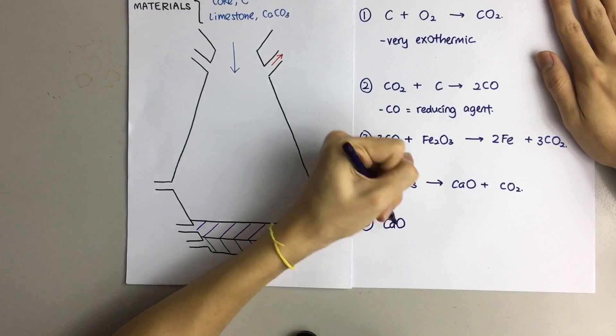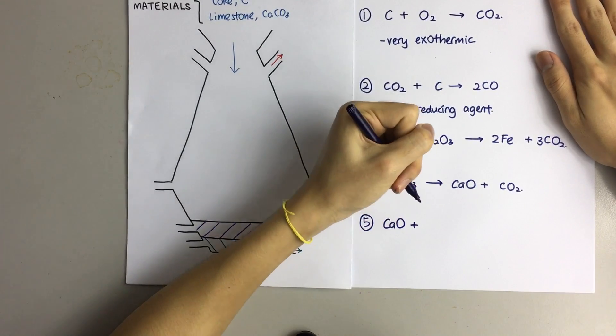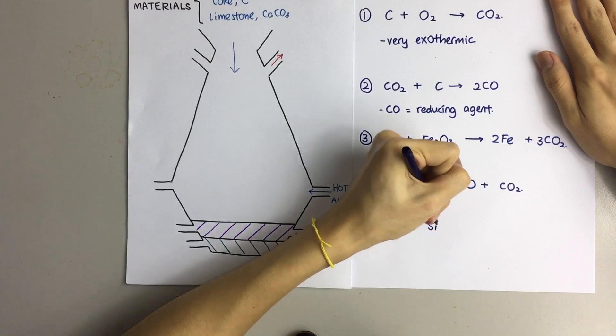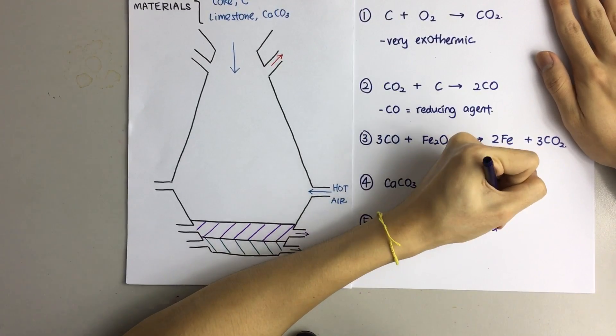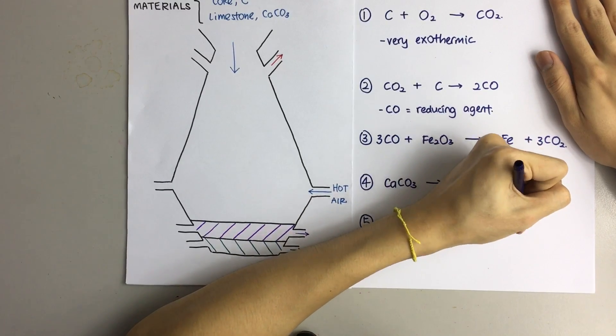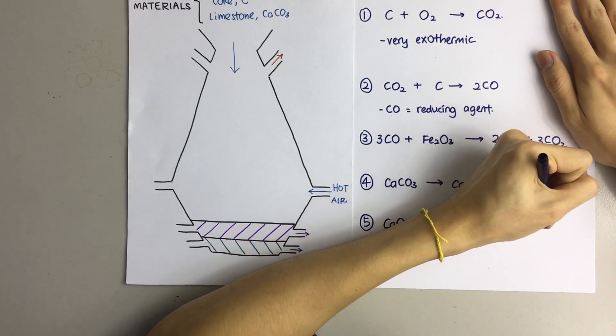Calcium oxide reacts with the main impurity which is silicon dioxide to form calcium silicate, which is known as slag.